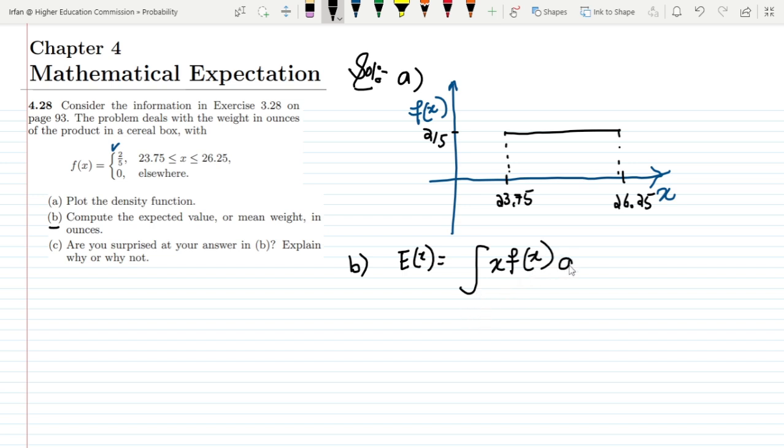Therefore I will have to integrate it with x f(x) dx and also here we have to write the limits because it limits from 23.75 to 26.25. So we will have 23.75 to 26.25. What will I get here putting the value of f(x) which is 2/5. So it will be 2/5.